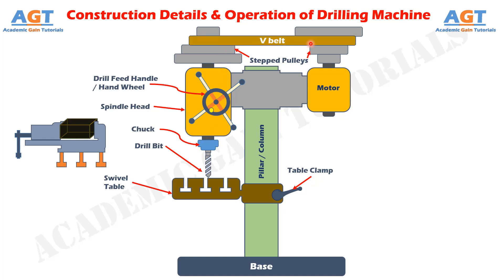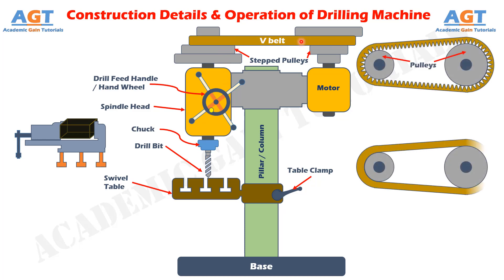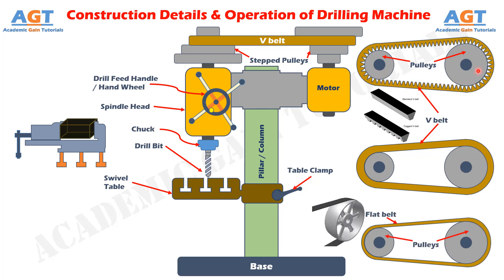A V-belt is placed between the stepped pulleys to drive the power transmission from one pulley to another. The V-belts have V-shaped grooves cut on their surface of contact with the pulley. These V-shaped grooves help the V-belt to sit firmly on the pulley without slipping or sliding away during rotation at high speed, overcoming the slipping problem with flat belts. A V-belt is used here because it is more firm and efficient in transferring motion between the stepped pulleys than using a flat belt.